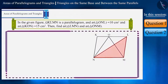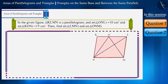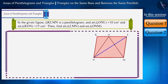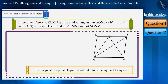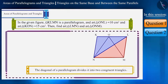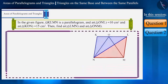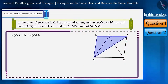We need to find the area of triangle LMN. It's given that quadrilateral KLMN is a parallelogram and NL is its diagonal. We know that the diagonal of a parallelogram divides it into two congruent triangles and their areas are equal. Therefore, the area of triangle KLN and triangle LMN will be equal.